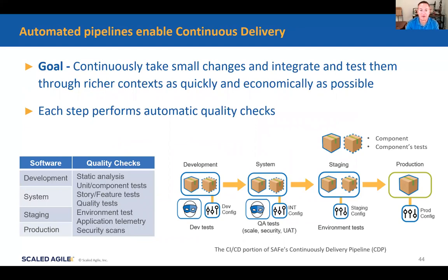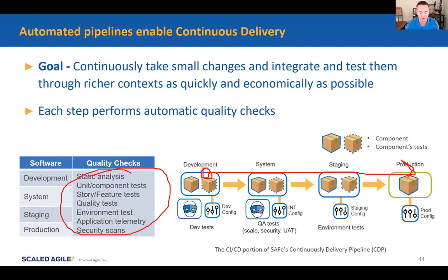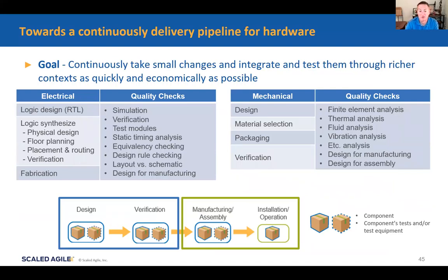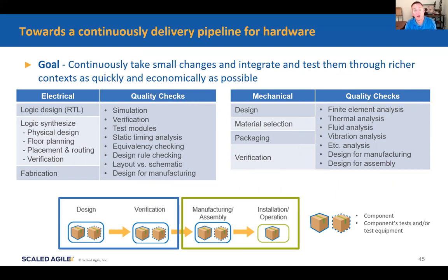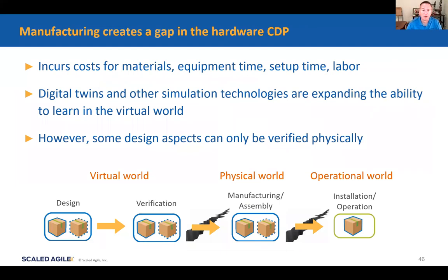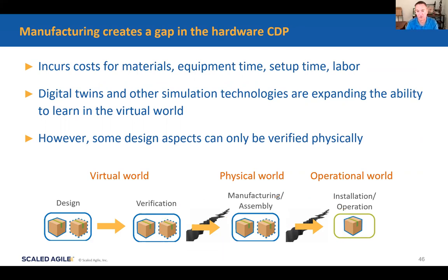We have the same kind of continuous delivery pipeline in hardware, it just looks a little different — design, verification, manufacturing, assembly, operation, installation, with quality checks along the way. Can we think about how to automate those tests so they're automatically run on small changes? We have a couple of chasms on our hardware CDP though. One is when we move to the physical world and actually have to build a part. Another is as we move to installation and operation — we have to take things out of the operational environment and update them. Let's talk about each one of those.